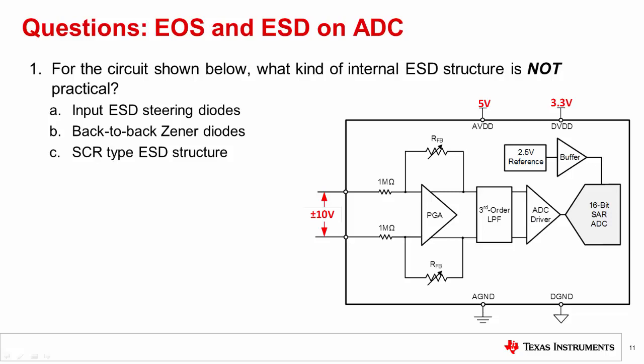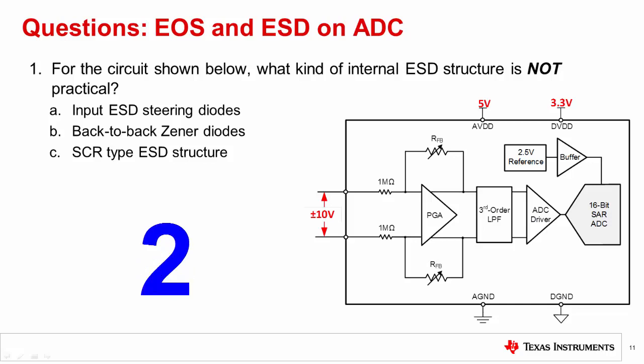For the circuit shown below, what kind of internal ESD structure is not practical? The correct answer is A, input ESD steering diodes. These diodes are not practical for this circuit because the input voltage is 10 volts and the supply voltage is 5 volts. ESD diodes are only used when the input range is the same or less than the power supply.